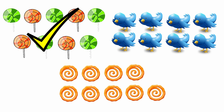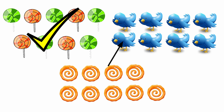Then look at the next one. There are 1, 2, 3, 4, 5, 6, 7, 8. There are 8 birds. There are only 8 birds. So we should not take the picture of birds.